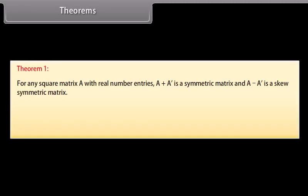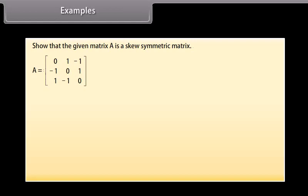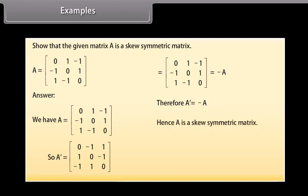Theorems: For any square matrix A with real number entries, A + A' is a symmetric matrix and A - A' is a skew-symmetric matrix. Any square matrix can be expressed as the sum of a symmetric and a skew-symmetric matrix. Example: Show that the given matrix A is a skew-symmetric matrix. A transpose is matrix row-wise — first row: 0, -1, 1; second row: 1, 0, -1; third row: -1, 1, 0. We can see that this is equal to -A. Therefore, A' = -A. Hence, A is a skew-symmetric matrix.